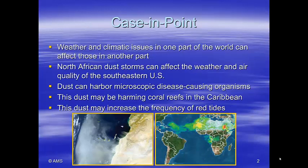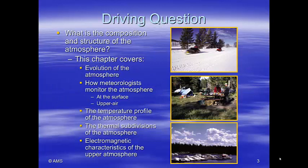Weather and climatic issues in one part of the world can affect those in other parts. For example, North African dust storms can affect the weather and air quality in the southeastern U.S. Dust particles can harbor microscopic, disease-causing organisms. This dust can also harm the coral reefs, and it may increase the frequency of red tides. In this chapter, we'll talk about the composition and structure of the atmosphere, how meteorologists monitor the atmosphere at the surface and in the upper atmosphere, the temperature profile, the thermal subdivisions of the atmosphere, and the electromagnetic characteristics of the upper atmosphere.